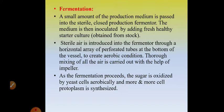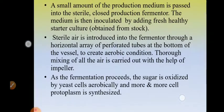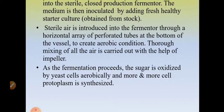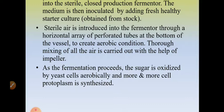Once you have selected proper raw material and developed the inoculum of yeast cells, you carry out the fermentation. A small amount of production medium is passed into a sterile closed production fermenter. The medium is then inoculated by adding fresh, healthy starter culture obtained from the stock. Sterile air is introduced into the fermenter through a horizontal array of perforated tubes at the bottom of the vessel — the air sparger — to create aerobic conditions. Thorough mixing is carried out with the help of an impeller. As fermentation proceeds, the sugar is oxidized by yeast cells aerobically and more and more yeast protoplasm is synthesized.